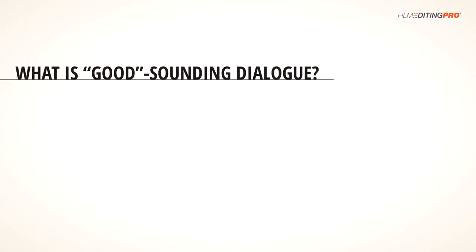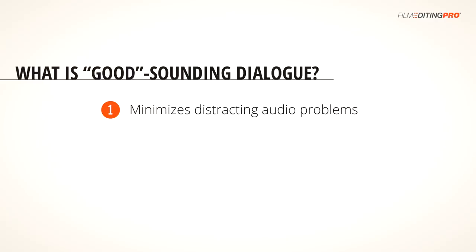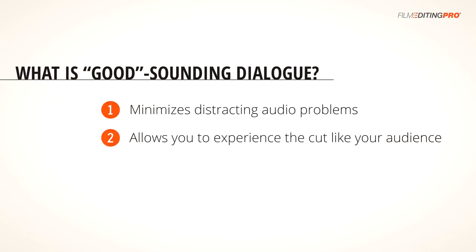What is good sounding dialogue? Good sounding dialogue is dialogue that minimizes distracting audio problems like interference, phasing, hums, excessive cloth rustling against the mic, audio peaking, large differences in levels, and a few other problems that tend to plague production audio. On a higher level, it's dialogue that allows you to experience the piece in a way that's as close as possible to how your audience will after it's been cleaned up and polished by the sound department. As you're rough cutting, you'll want to make sure you aren't distracted from how a moment really feels due to excessively poor quality audio.